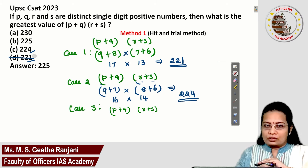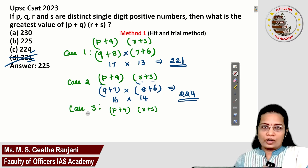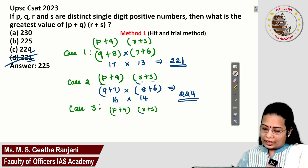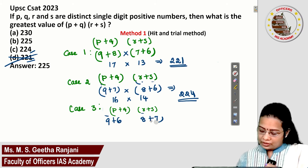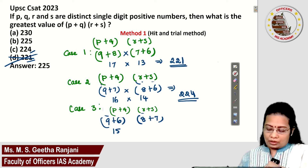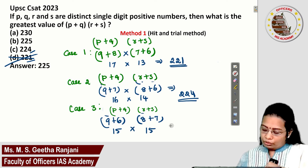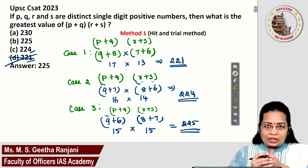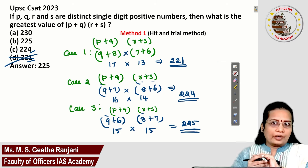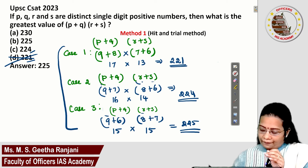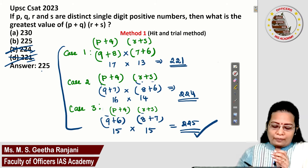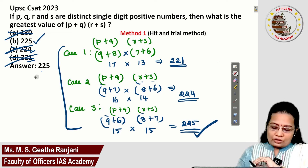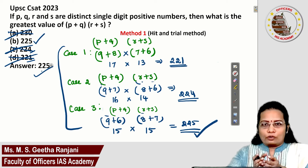For Case 3, we get (9+6) × (8+7). So 9+6 is 15, and 8+7 is also 15. 15 × 15 equals 225. Within the given conditions, there are totally 3 possible cases, and among them the greatest value is 225. We can eliminate 224, and 230 is not possible since only 3 cases exist. So the answer is 225 under the hit and trial method.